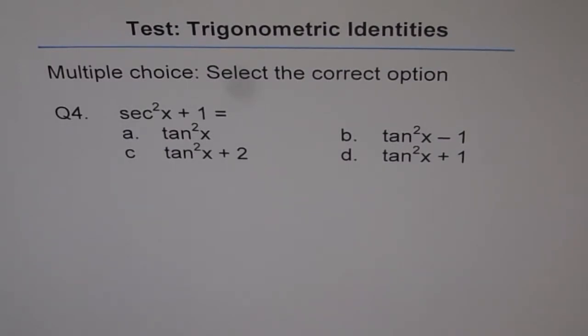Secant square x plus 1 is equal to: tan square x, tan square x minus 1, tan square x plus 2, tan square x plus 1. Make your choice and then look into my solution.